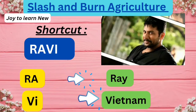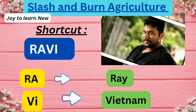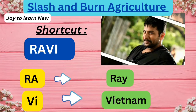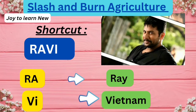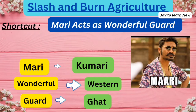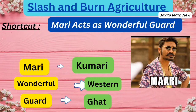The next shortcut is the actor's name 'Jayam Ravi.' RA stands for Ray, and VI stands for Vietnam. So Ray is the name for slash and burn agriculture in Vietnam.